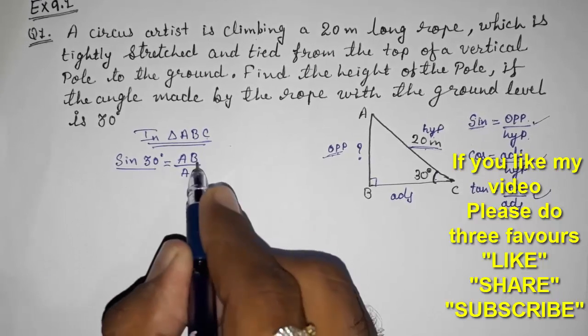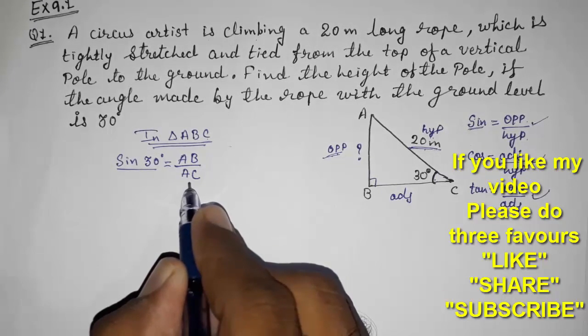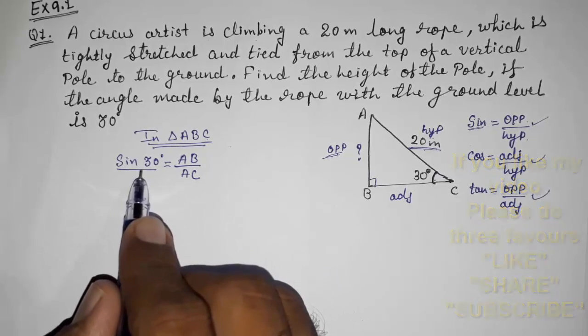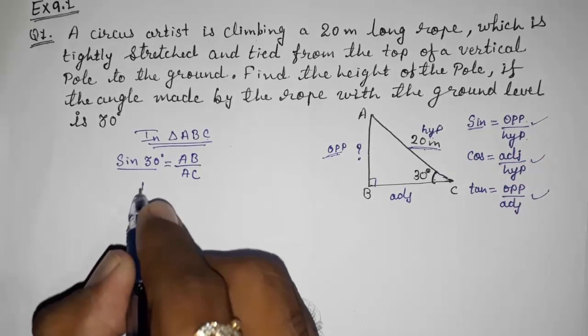So we had used sine 30 equals AB upon AC. Now we should know the value of sine 30, that is 1 by 2.